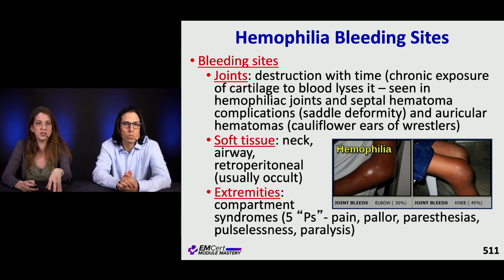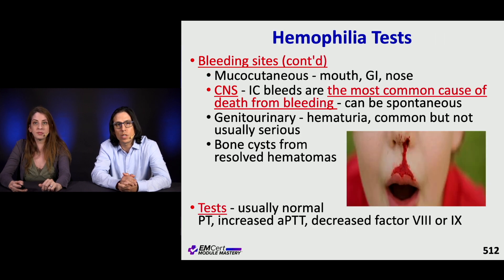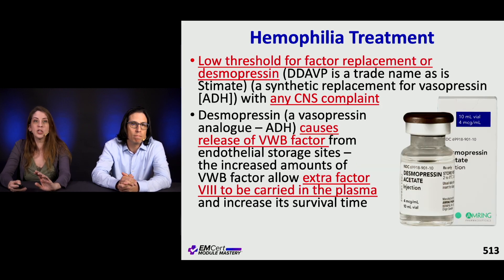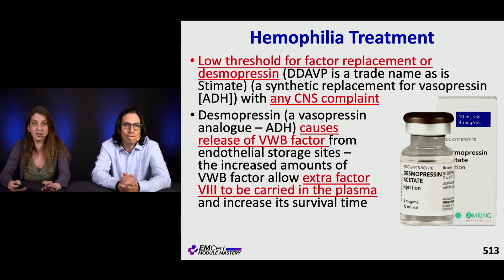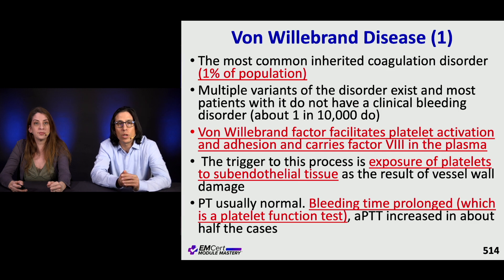Retroperitoneal bleeding can be occult and harder to detect. In extremity bleeds, watch for compartment syndrome — remember the five P's. Lab findings in hemophilia typically show a normal PT with an elevated aPTT; decreased factor VIII or IX levels confirm the diagnosis. Treatment involves a low threshold for factor replacement. Desmopressin stimulates release of von Willebrand factor from the endothelium, which carries factor VIII in the plasma and increases its survival time.